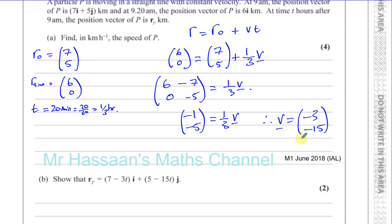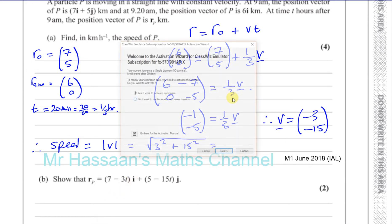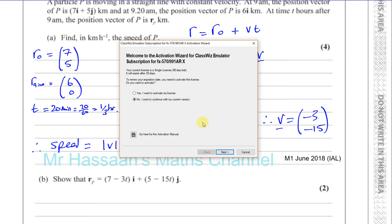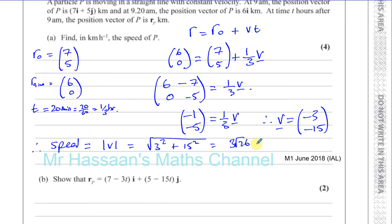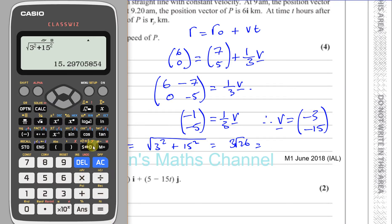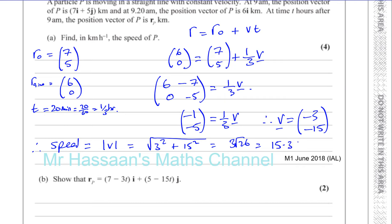That's the velocity vector v. The speed is the magnitude of the velocity — they are not asking for the velocity but the speed. So the speed is the square root of 3² + 15², which gives us 3√26, which equals 15.3 kilometres per hour. That's the answer to part a.